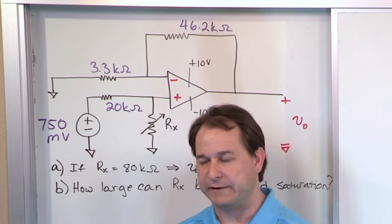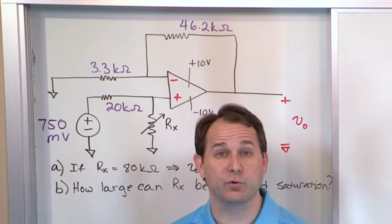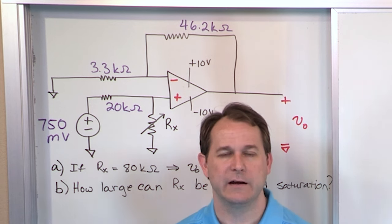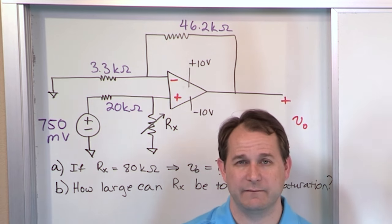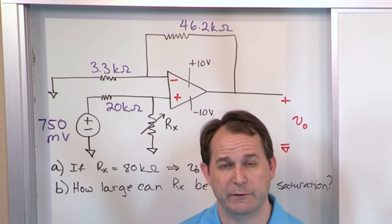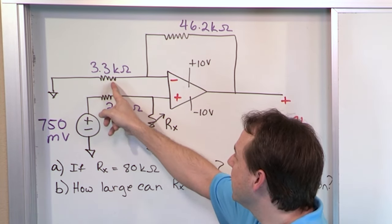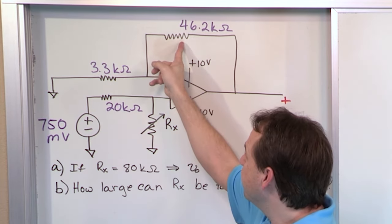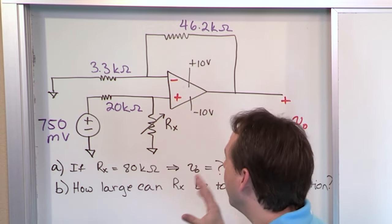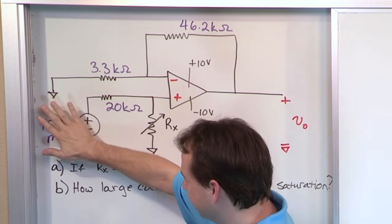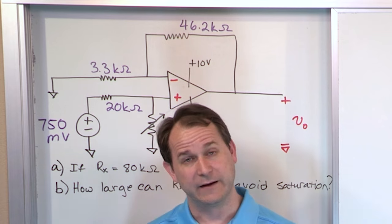We're going to take it one step at a time. Before we solve the problem, I want to call something to your attention. The gain equation for the non-inverting op amp — do you remember? It was 1 plus R_F over R_S. Go back to the last lesson if you don't remember that. What this means is regardless of what is down here in the input network, it has no bearing or relevance on what the gain of this amplifier is.